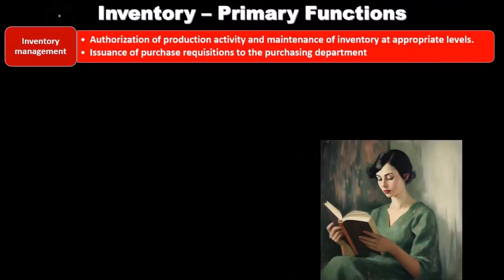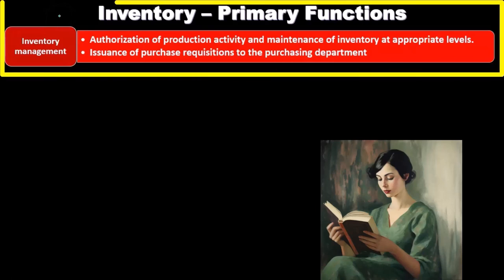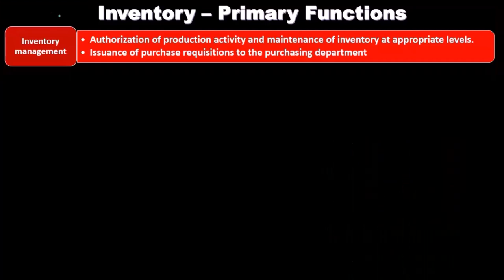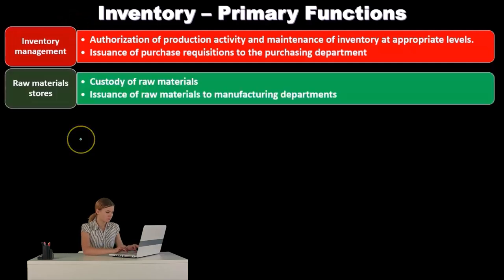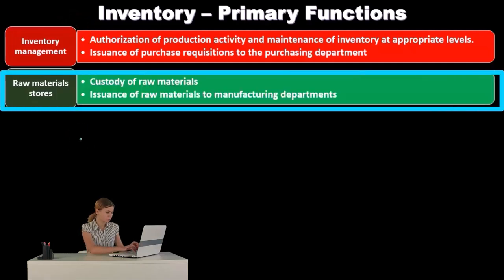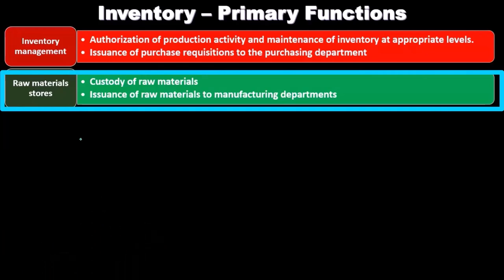Now we'll look at the primary functions related to inventory. First, inventory management involves the authorization of production activity, maintenance of inventory at appropriate levels, and issuance of purchase requisitions to the purchasing department. Then raw materials stores involves the custody of raw materials and the issuance of raw materials to the manufacturing department.